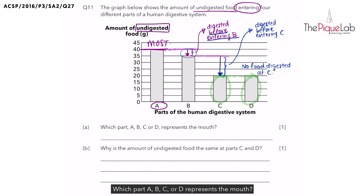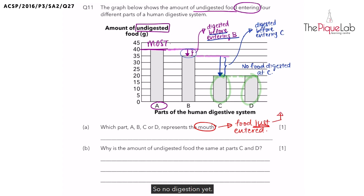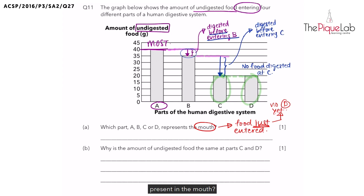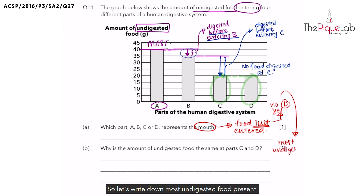Now let's look at the questions. Which part — A, B, C, or D — represents the mouth? In the mouth, this is where food just entered the digestive system, so nothing has been digested yet — no digestion yet. Since there was no digestion yet, most of the undigested food would be present here. So let's write down: most undigested food present.